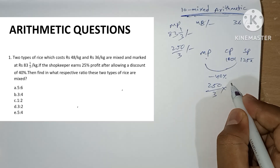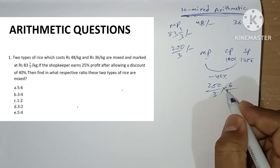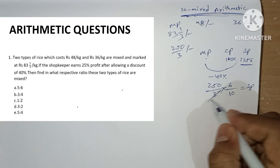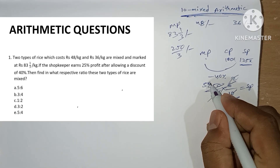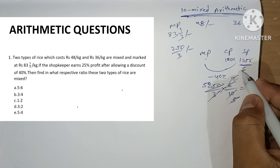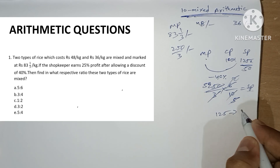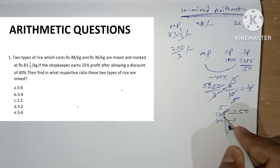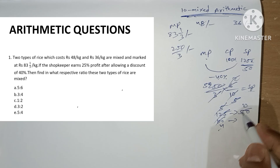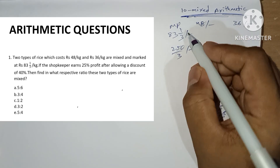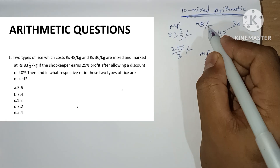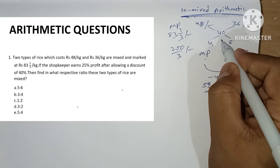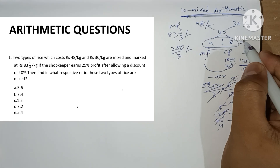With 40 percent discount we are left with 60 percent, so we sell at 60 percent of the market price. Market price is 250/3, selling price works out to 50 rupees. Since 125 percent equals 50, the cost price will be 40. The difference from 48 is 4 and from 36 is 8, giving a ratio of 4 to 8, which simplifies to 1 is to 2.